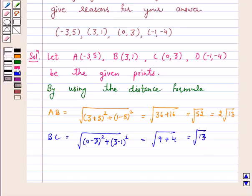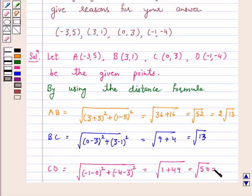And distance CD is equal to (-1-0)² + (-4-3)². This is equal to square root of 50, which is equal to 5√2.